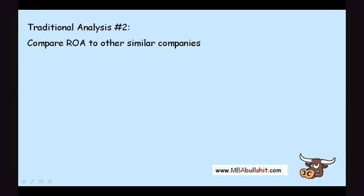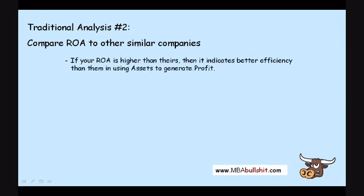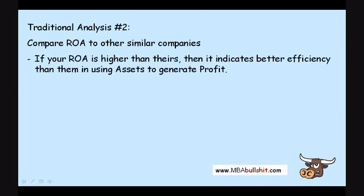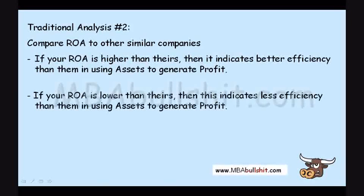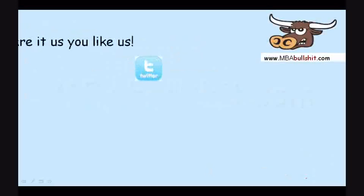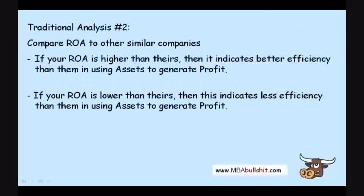Another approach is to compare ROA to other similar companies. If this company's ROA is higher than the ROA of similar companies in similar industries, it indicates better efficiency than them in using assets to generate profit. Conversely, if the ROA is lower than theirs, it indicates less efficiency. The earlier part of this video had my own analysis and the later part had traditional analysis.